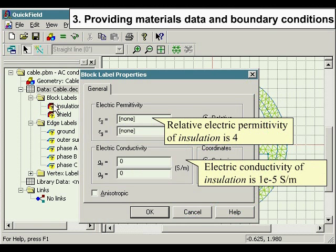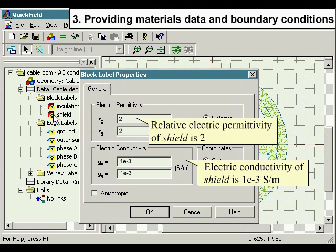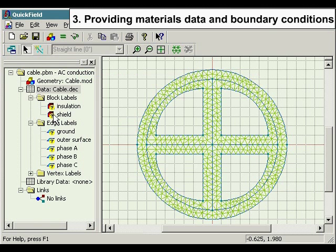Relative electric permittivity of insulation is 4. Electric conductivity of insulation is 1e to the negative 5 Siemens per meter. Relative electric permittivity of shield is 2. Electric conductivity of shield is 1e to the negative 3 Siemens per meter.